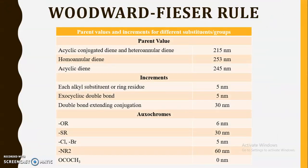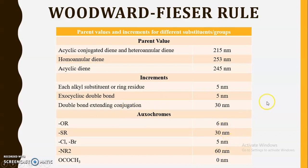Now we are familiar with this particular chart. Cyclic dienes are either homoannular or heteroannular. Acyclic conjugated dienes and heteroannular dienes have the same base value of 215 nanometers. If it is a homoannular diene, the base value is 253 nanometers. If it is an acyclic diene, the parent value is 245 nanometers. We have also seen how to use the increments and how different auxochromes, if present, contribute values to be added. I hope you have noted these values.